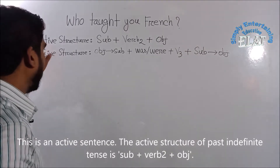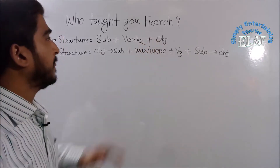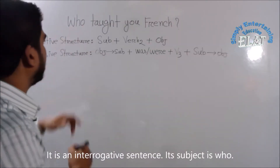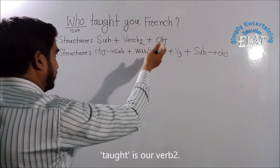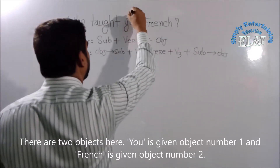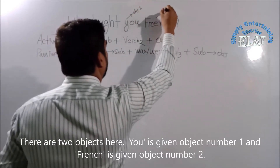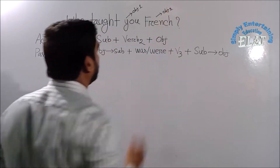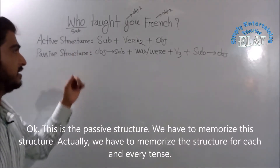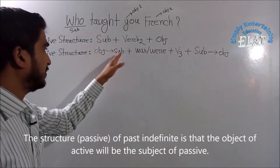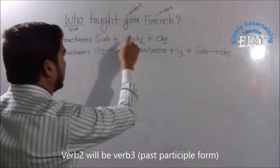The past infinitive tense has an active structure. In an active sentence, the structure is subject, verb, object. This is an interrogative sentence — subject is 'who', and 'taught' is verb 2. There is also an object. Verb 2 except verb 3.